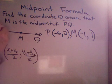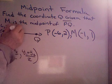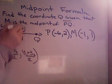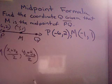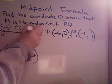they give me the point P, which is negative 6, 2. They give me point M, which is negative 1, 1. They don't give me point Q. So, I'm going to call that just x and y.